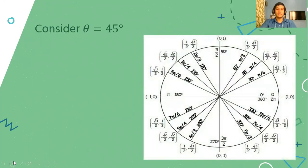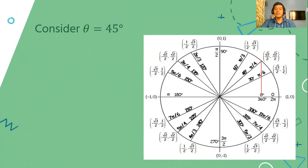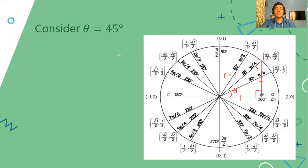Now let's have this example. Let us consider theta which is 45 degrees. Recalling theta, let us illustrate 45 degrees on this figure. I'll be drawing a line which is perpendicular to the x-axis, forming a reference angle of 45 degrees. So if this is 90 and theta is 45, we also have a 45-degree angle here. This becomes an isosceles right triangle. Since this is a unit circle, r is exactly 1, and r is also the hypotenuse of the right triangle.